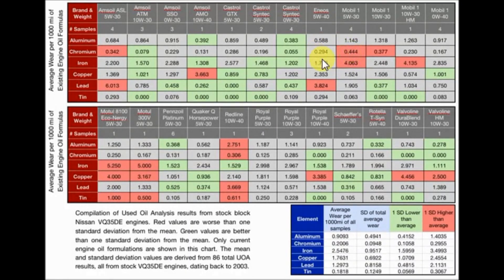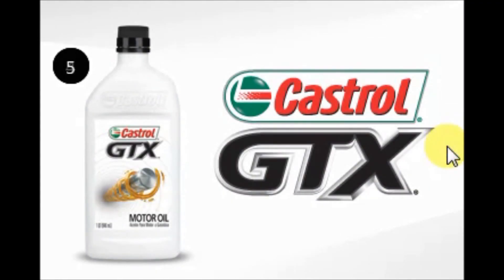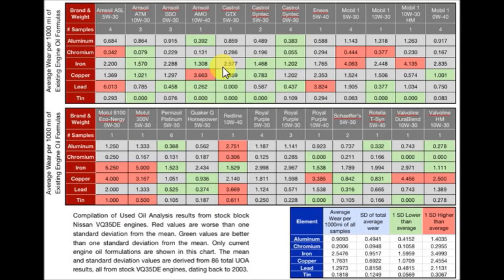As you see here on the chart, Mobile One - all had three reds in it. All three different samples had red, different weights I should say. Red means it's showing higher than average per thousand miles of particles of metal. Fifth place was just regular Castrol GTX. Castrol GTX 5w30 came in fifth place. It had no red at all and it had three areas - copper, lead, and tin - that were better than average.